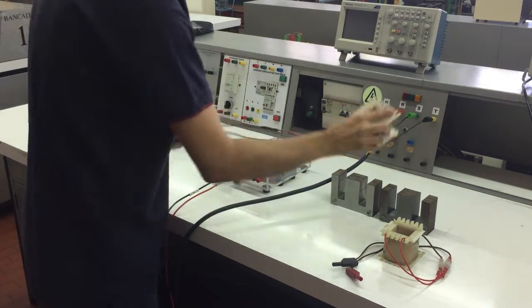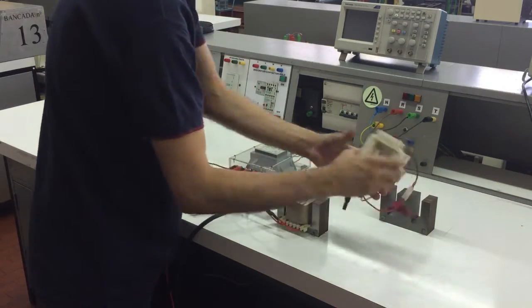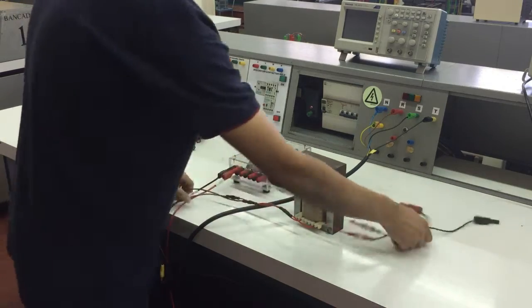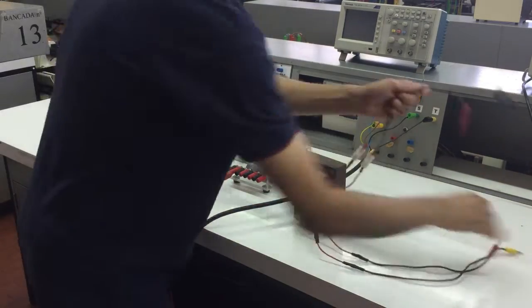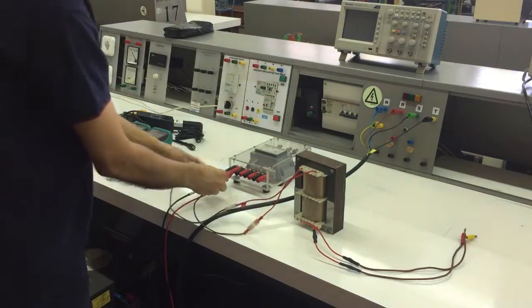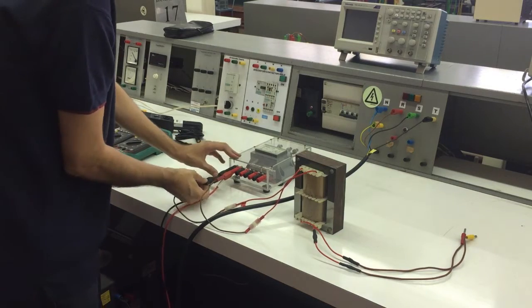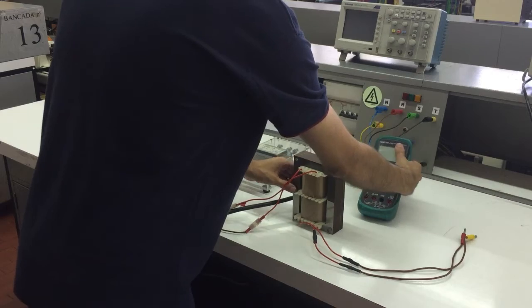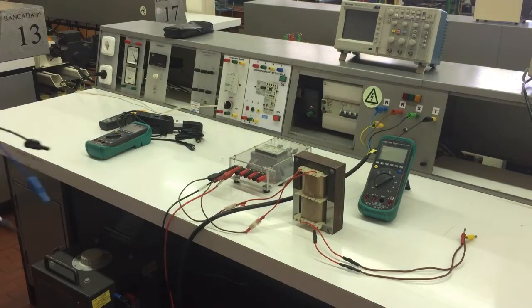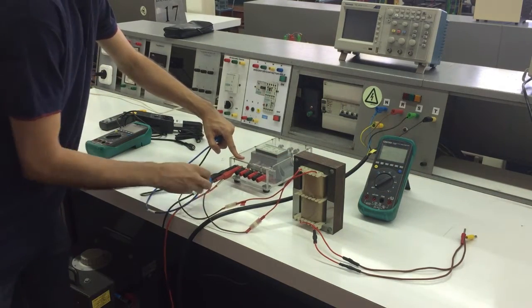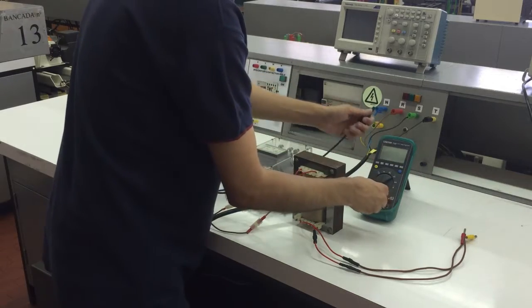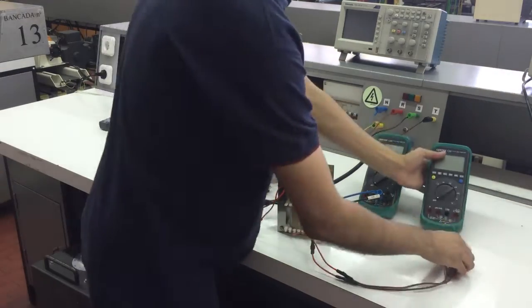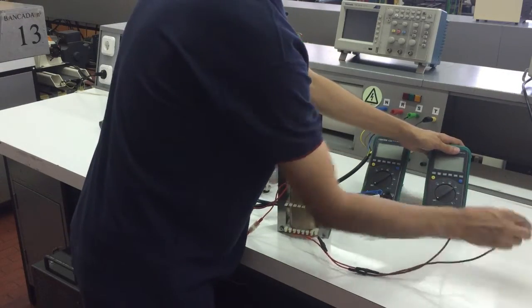Assemble the magnetic circuit and connect the primary windings to the instrument transformer, and connect it also to a voltmeter. Next, connect the secondary windings of the magnetic circuit to another voltmeter.